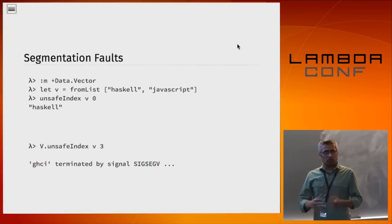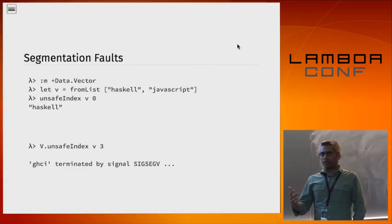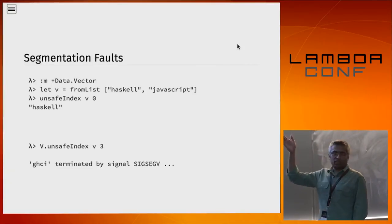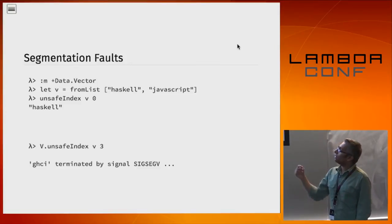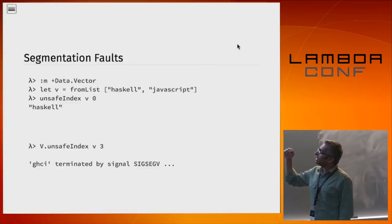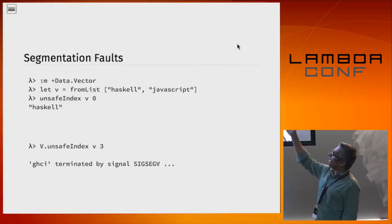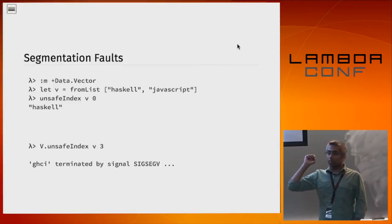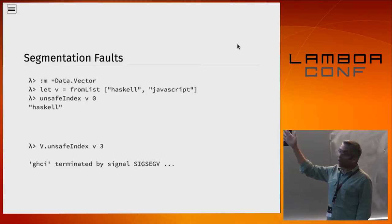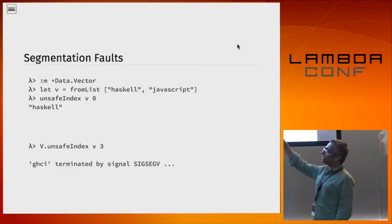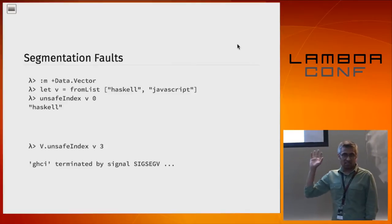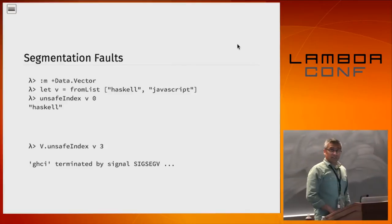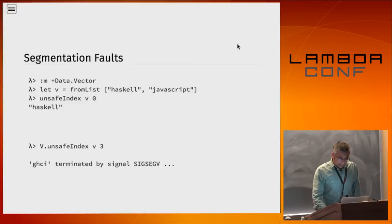Here's another example where the consequences are more drastic. If you fire up GHCi, you can load up Data.Vector. Create a little vector with two elements, Haskell and JavaScript. You can index it at position zero — that works fine. You can index it at position one — that works fine too. But if you index it at position three, you get a nasty seg fault.